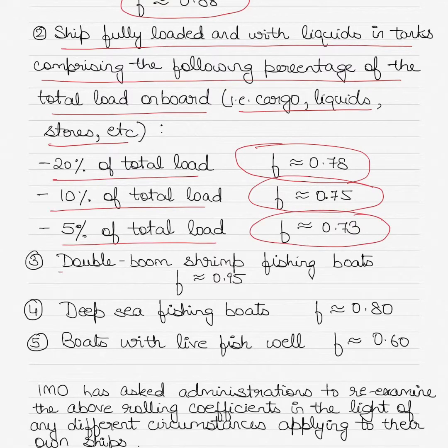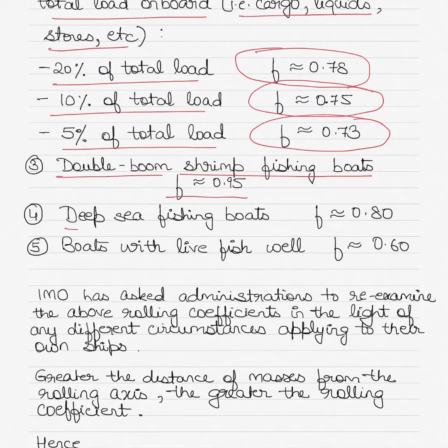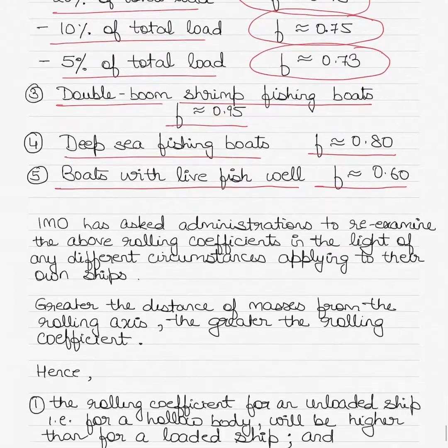For double boom shrimp fishing boats the factor was considered as 0.95. For deep sea fishing boats the factor was 0.80. Boats with live fish well, the factor was considered as 0.60. I know maybe most of you watching are not sailing on fishing vessels, but it's important to know about this in terms of advanced ship stability.